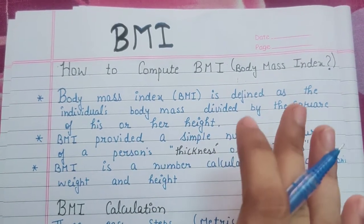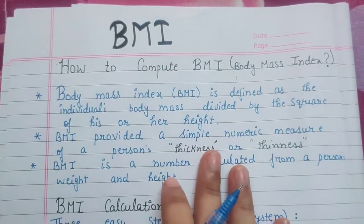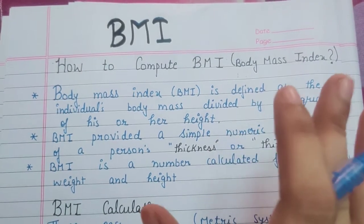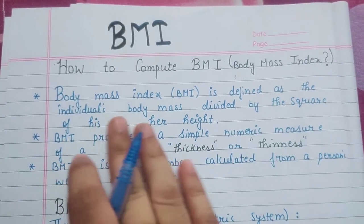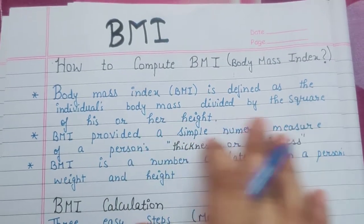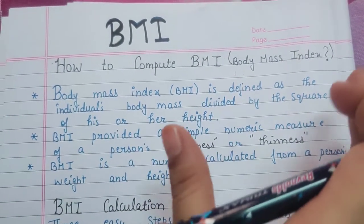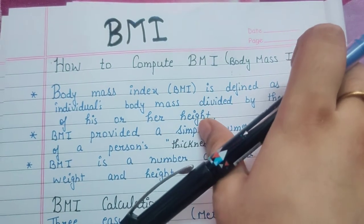What is Body Mass Index? Body Mass Index is defined as the individual's body mass divided by the square of his or her height. The formula is weight upon height square, which I will discuss later.